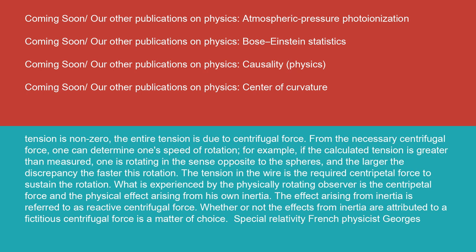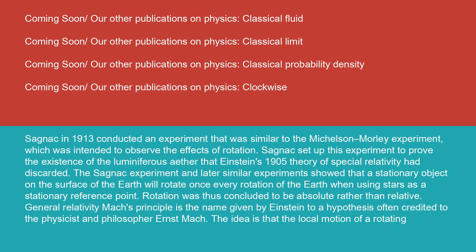French physicist Georges Sagnac in 1913 conducted an experiment that was similar to the Michelson-Morley experiment, which was intended to observe the effects of rotation. Sagnac set up this experiment to prove the existence of the luminiferous ether that Einstein's 1905 theory of special relativity had discarded.